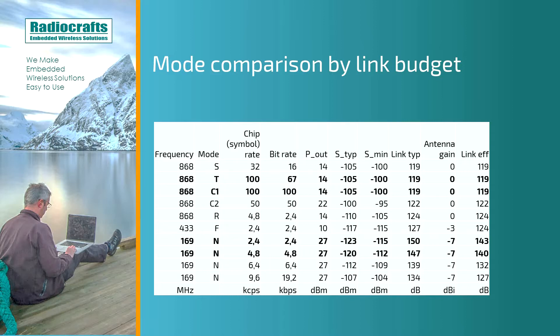Comparing the T mode and C mode at 868 MHz with the 169 MHz N mode, we see that the N mode has a much better link budget. This is what we utilize for water and gas meter installations.